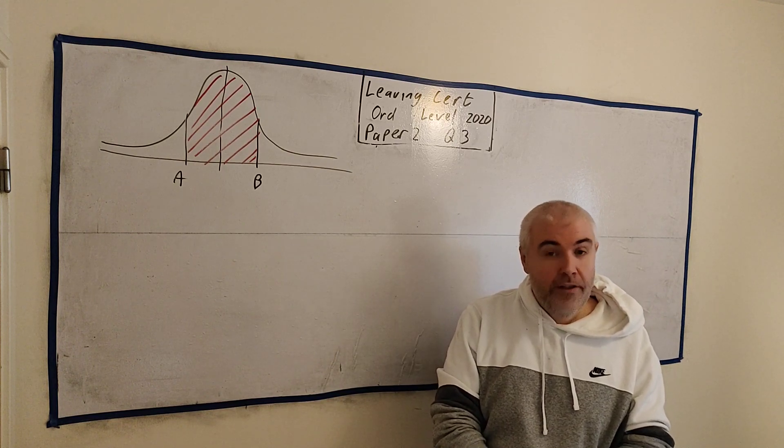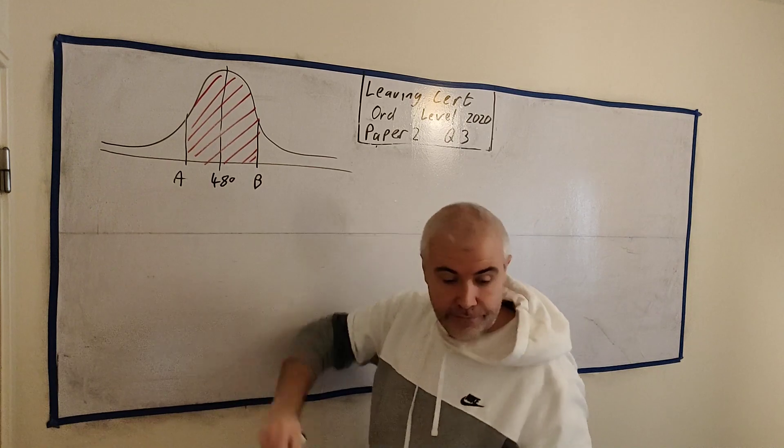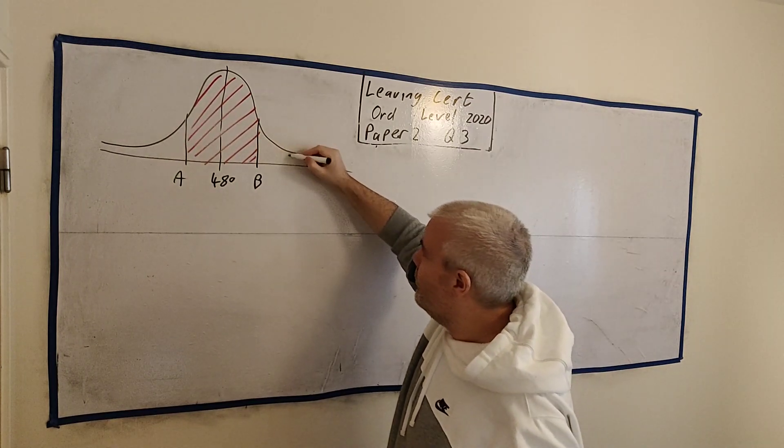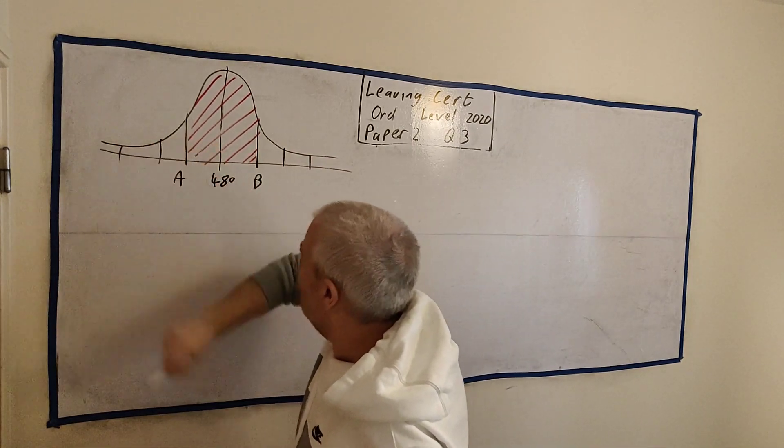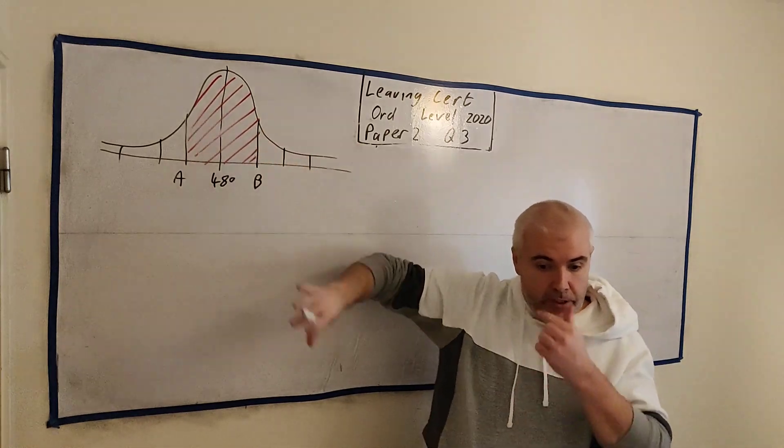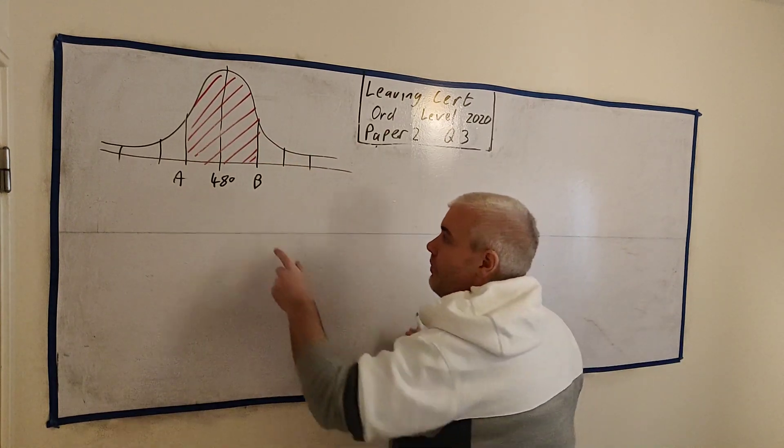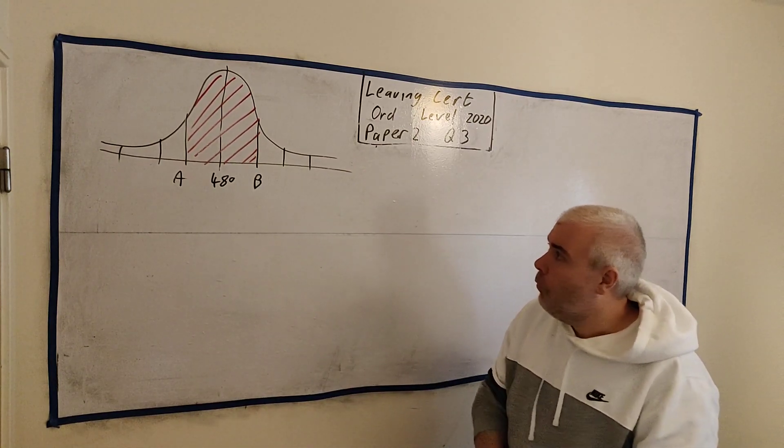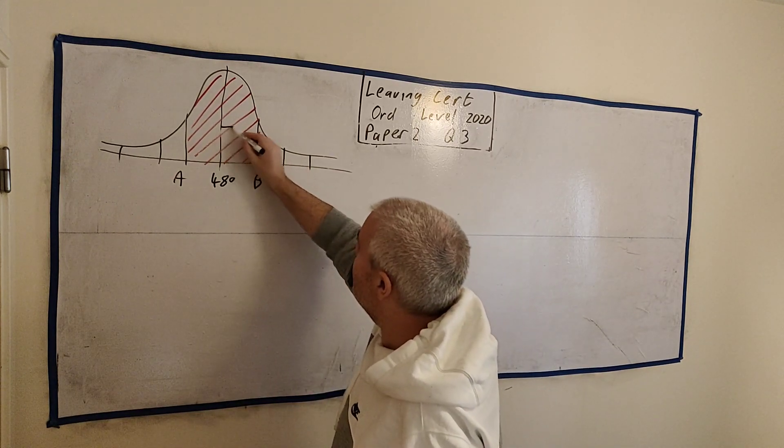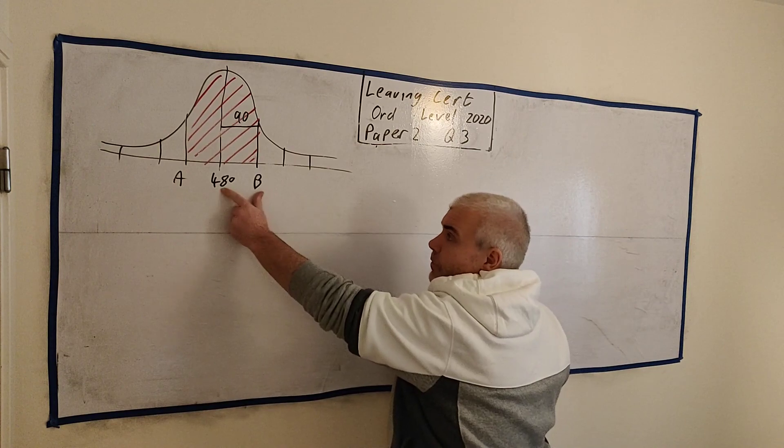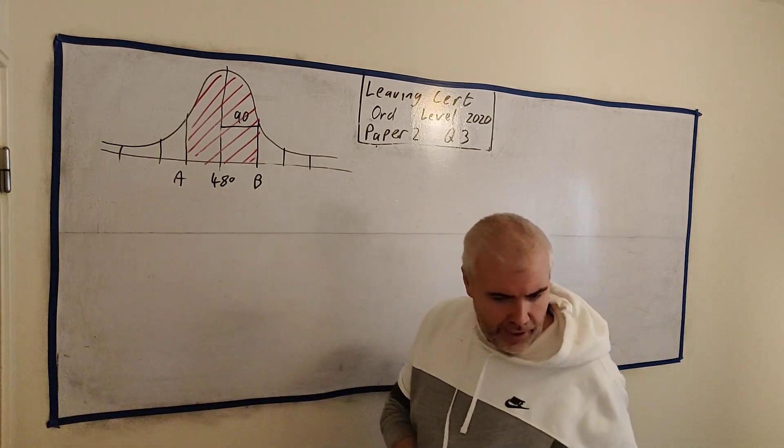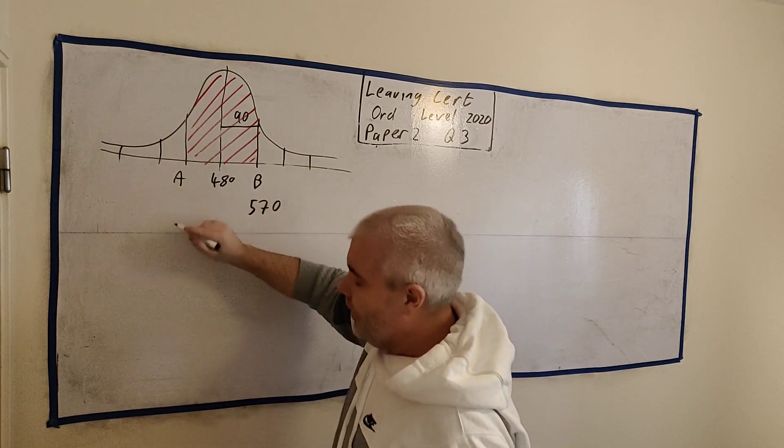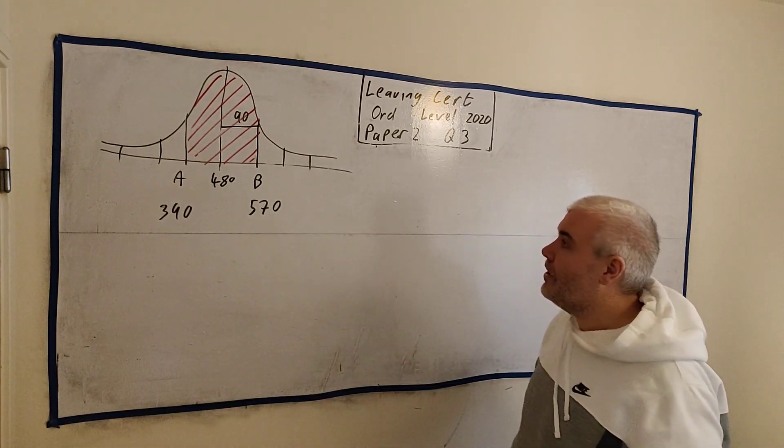So the mean score, that's the average, right in the middle is 480, and the standard deviation is 90. So we often split these up into standard deviations. They tell us this shaded region represents all the people who are within one standard deviation of the mean. So this is the mean, this is one away. Write down the values of A and B. Well, they tell us the standard deviation is 90. That means the distance from there to there is 90. So what's B? Well, it's just 90 bigger than 480. 570 would be B, and 90 less would be 390.